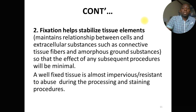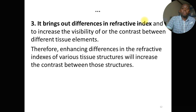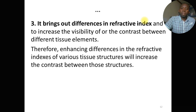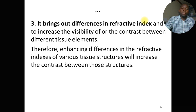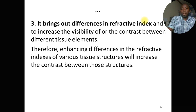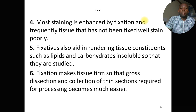Fixed tissue is almost impervious and resistant to abuse during processing and staining procedures. A third purpose is that fixation brings out differences in refractive index and increases visibility and contrast between different elements. Under microscopy, this contrast allows differentiation of one element from another. Fixation enhances staining and enhances contrast between the different elements of the cell or tissue by increasing their refractive index, making examination easier.